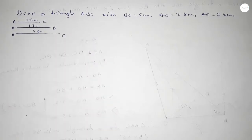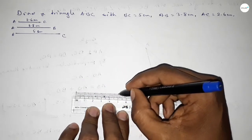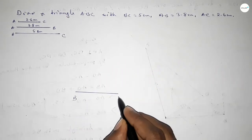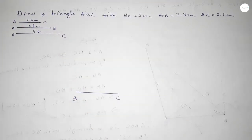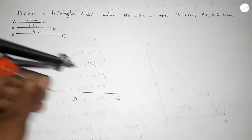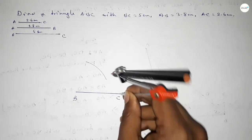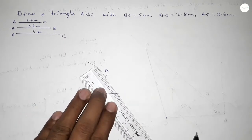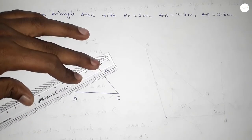First we have to draw here a line of length 5 centimeter, taking here point B and here point C. Next, taking the length AB 3.8 and putting the compass on point B and drawing an arc. Now taking the length AC 2.6 centimeter, putting the compass here and cutting — so both curves intersect at point A.